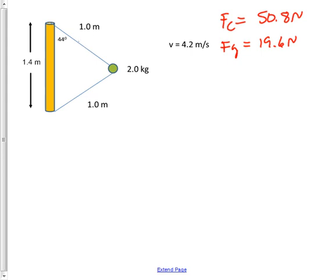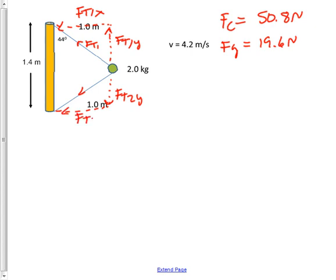Now from before, we called the force tension 1 here, and we did break that into x and y coordinates. This would be force tension 1x. This would be force tension 1 in the y direction. And likewise, we'll break this vector into its components. This would be force tension 2 in the y, and this is force tension 2 in the x.